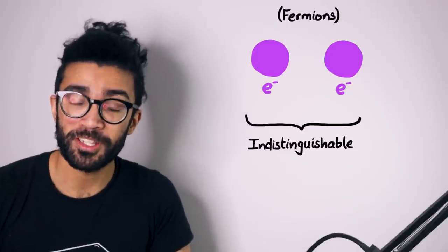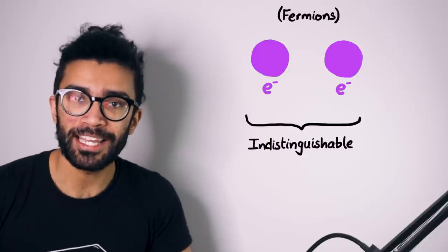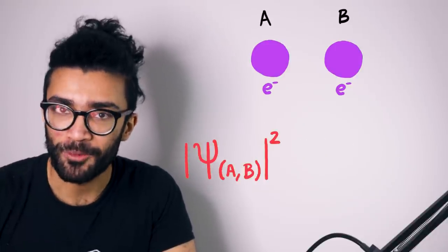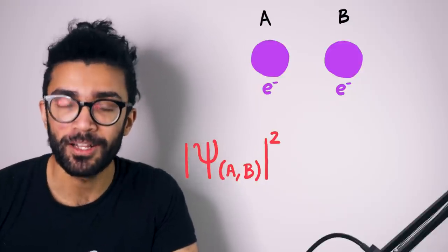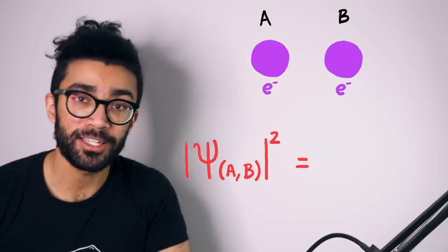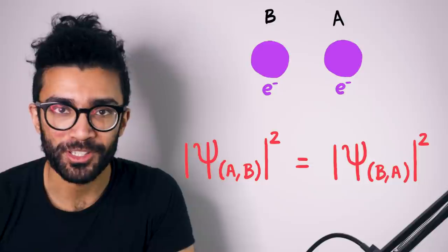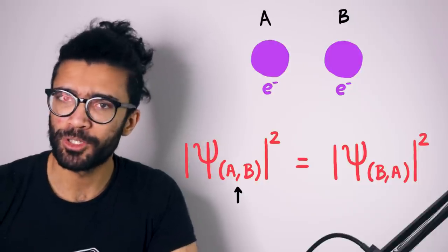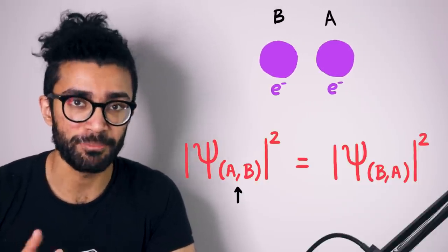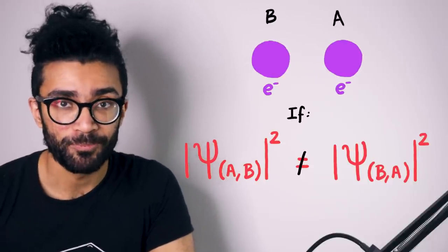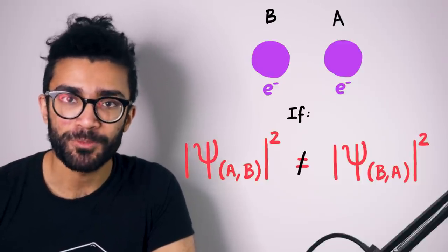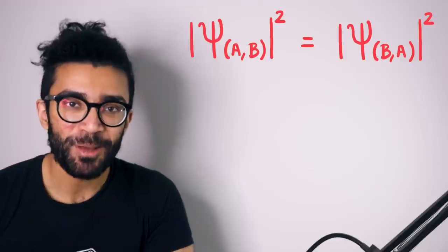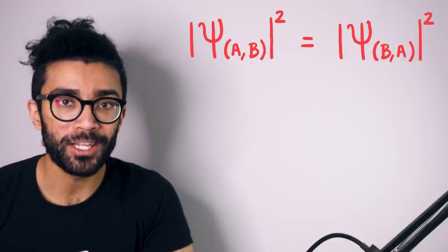The square of the wave function is something that we can directly measure in real life. And because these electrons are fermions — a particular kind of indistinguishable particle — we can encode their indistinguishability into the mathematics of quantum mechanics. The way that we do this is to say that the square of this system's wave function must be identical whether our particles are in orientation a-b or in orientation b-a. Because if these two quantities were different, there would be some way for us to measure it, and therefore some way to tell which orientation the particles were in, meaning they would no longer be indistinguishable.